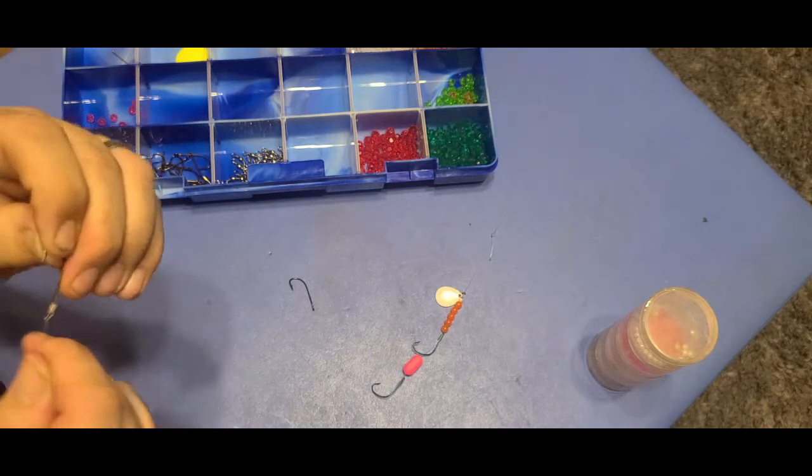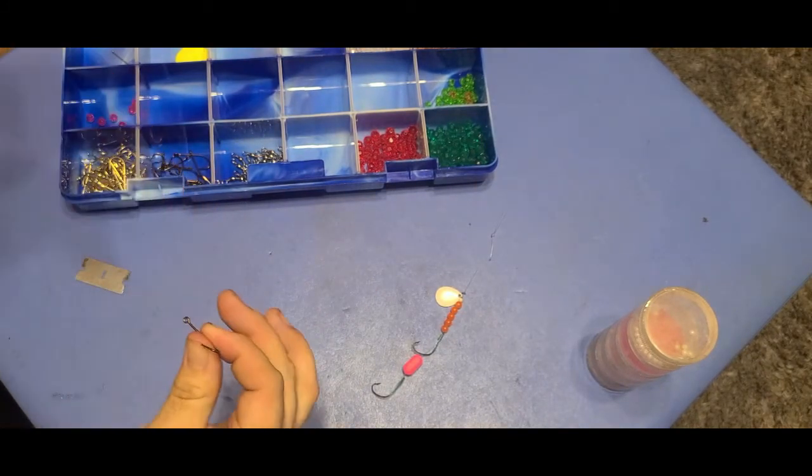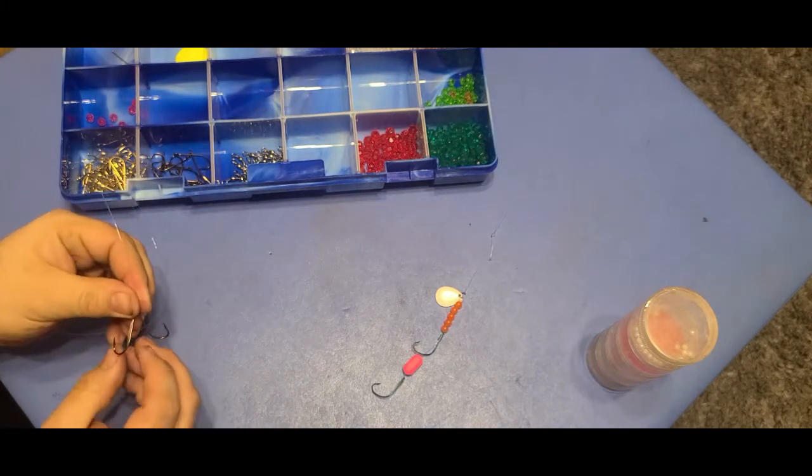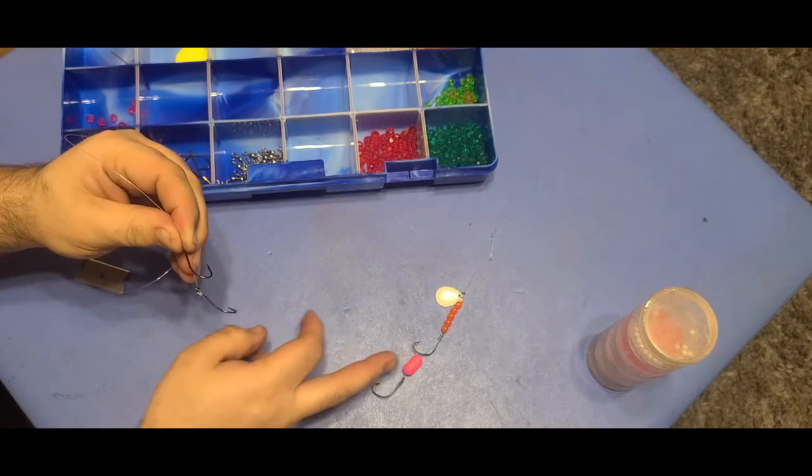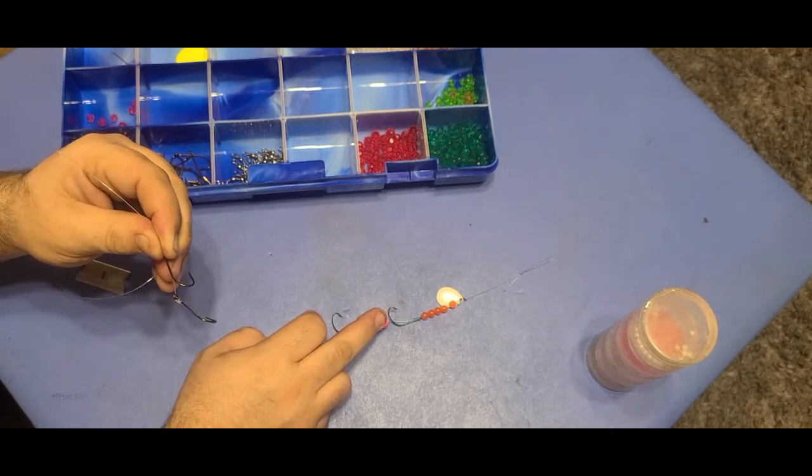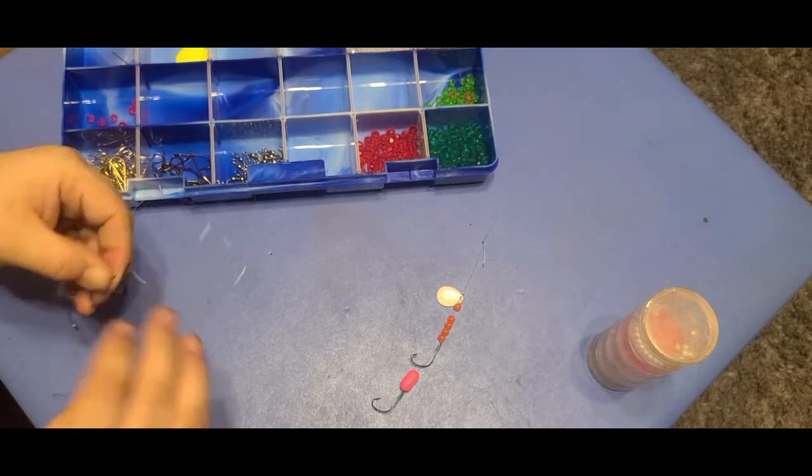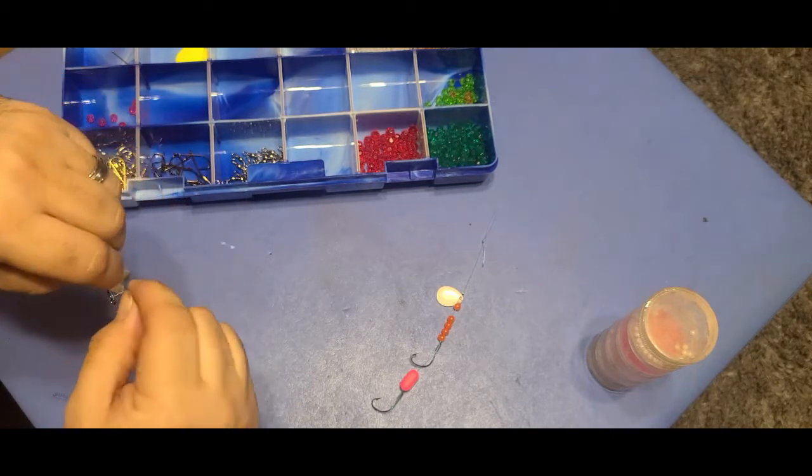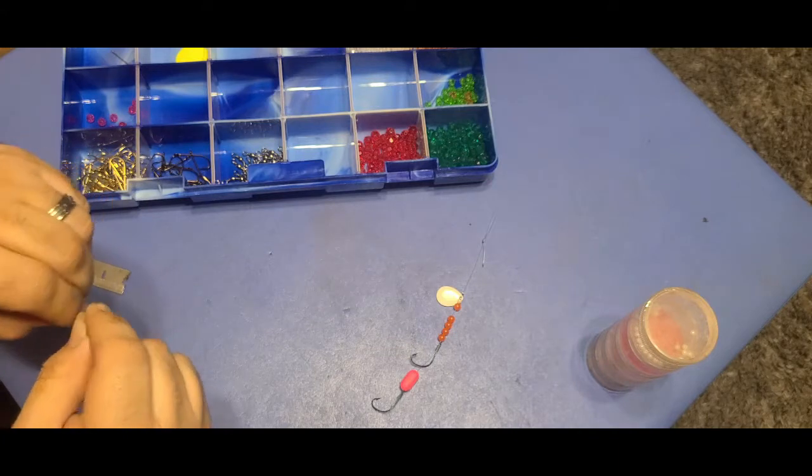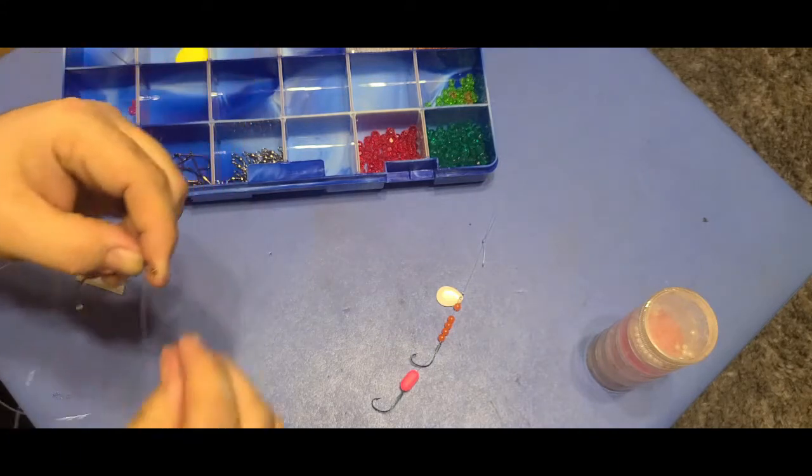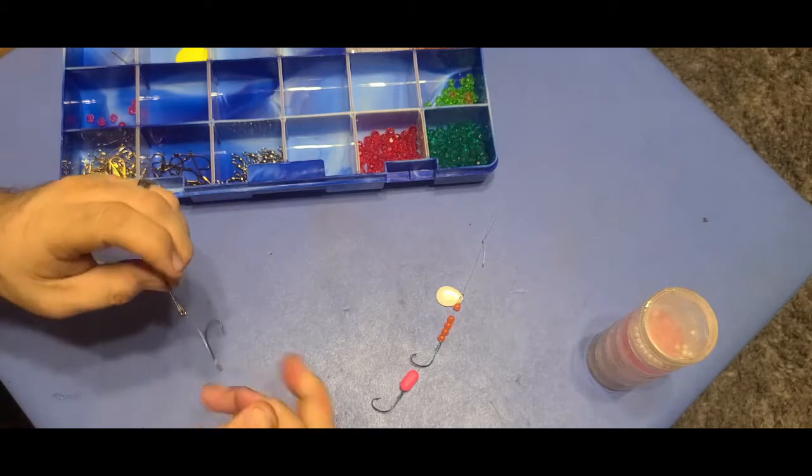In this case we're doing a double hook, so we need to thread our second hook on. Spacing is not super important. This looks about right for not having anything between. I'm not going to put anything so I'm going to get about that much room. Again, we're going to pull this back down, nice neat wrap four, five, six, seven, eight times. We're going to thread our line back through, pull it tight. These hooks are not going anywhere.